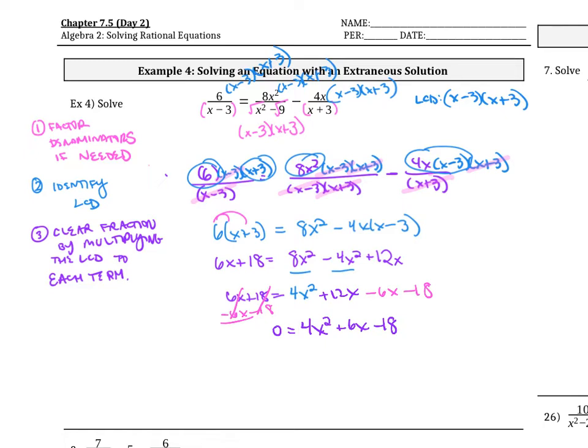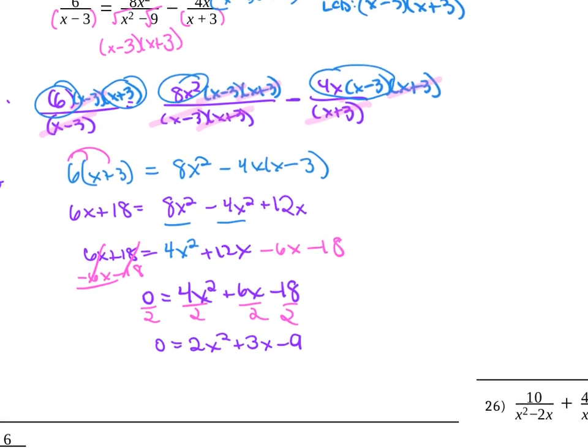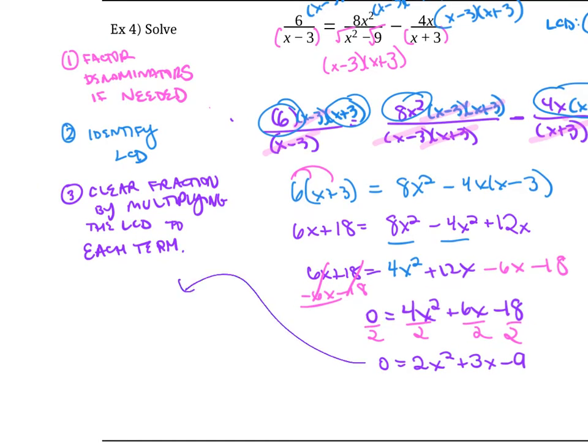Do we have a GCF? In this case, yes we do. We can divide each term by 2. Now we have 0 equals 2x squared plus 3x minus 9. We can factor this since a is greater than 1. Let's use the x box. If you don't need it anymore, you can use guess and check, whatever you are most comfortable with. This is 2 times negative 9 is negative 18. What multiplies to negative 18 that adds to positive 3? 6 times negative 3 is negative 18, and 6 minus 3 is positive 3. Now we can fill in the box. 2x squared goes here and minus 9, and these are our factors that go on the side, so 6x minus 3x.